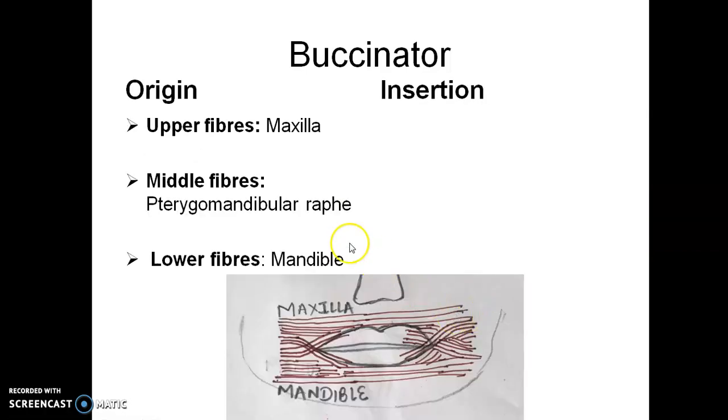The origin of the upper fibers is from the maxilla. Lower fibers is from mandible which is not moving. While the middle fiber is from pterygomandibular raphae.